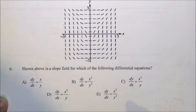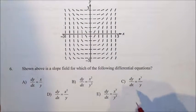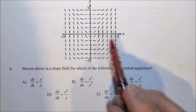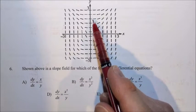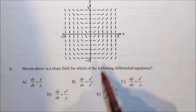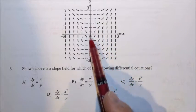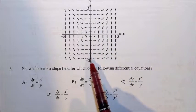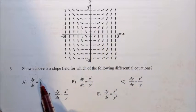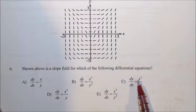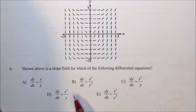Problem number six, I believe, is identical to the one on the homework. If we look for zero slopes here, because we're trying to match the slope field with the differential equation, we know that on the y-axis when x is zero, the derivative is zero because of the horizontal slopes.